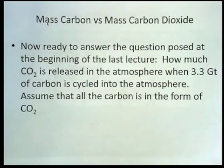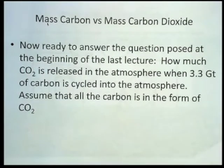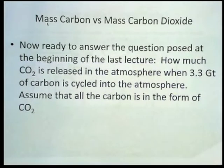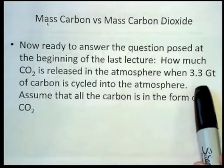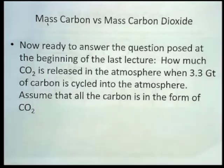Now we're ready to answer the question that we posed at the beginning of the last lecture, which was how much carbon dioxide is released in the atmosphere when 3.3 gigatons of carbon is cycled into the atmosphere. We know that 3.3 gigatons number comes from the human factors and how much extra carbon is going into the atmosphere that cannot be pulled back down by natural carbon dioxide dissolving in the oceans and being absorbed into living systems through plants. Assume that all the carbon in the atmosphere is in the form of carbon dioxide. So we're going to answer this question.